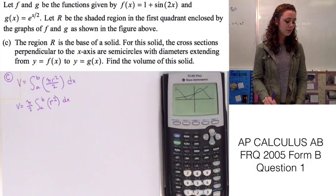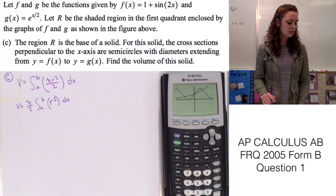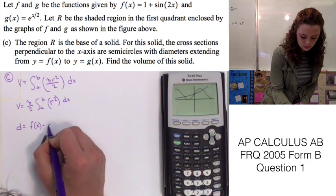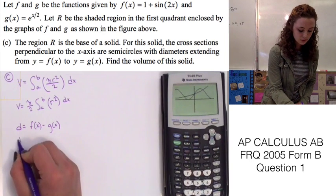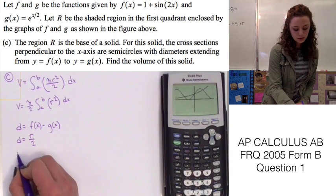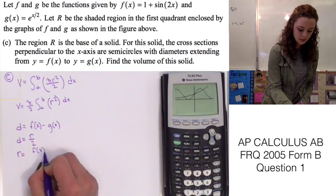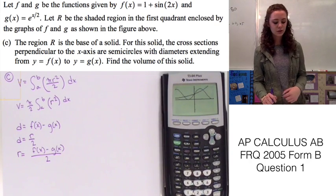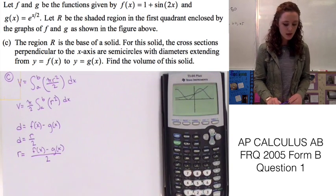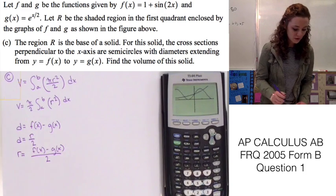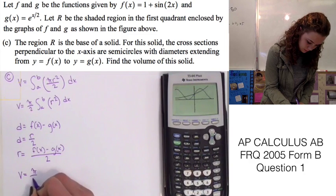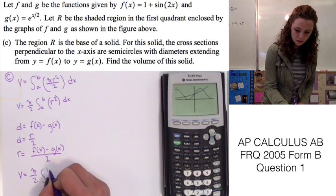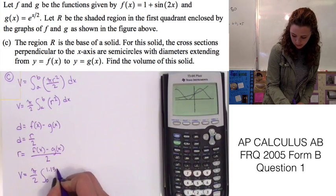Looking back at the problem, the diameter extends from f of x to g of x, so the diameter equals f of x minus g of x. We know the radius is equal to the diameter divided by 2, so the radius equals f of x minus g of x divided by 2. Now we have all the values to plug back into the simplified equation. The limits are still the same: lower limit is 0 and the upper limit is 1.136.